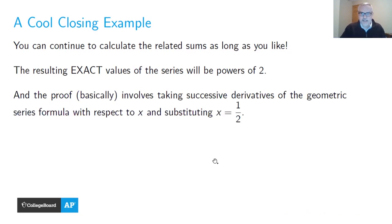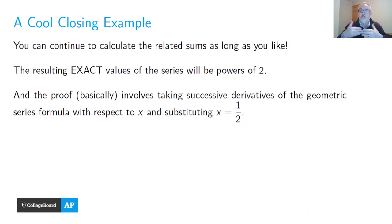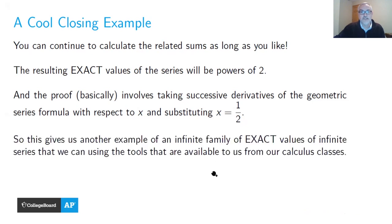The proof basically starts with the geometric series, but instead of alternating between differentiating and multiplying by x, you take all the derivatives first in a row, then multiply by the corresponding copies of x together — with a little extra constant thrown into each one. Substituting x = 1/2 gives these results: 2, 4, 8, 16, and so on. This gives us another infinite family of exact values of infinite series, available using tools you learn in AP Calculus.